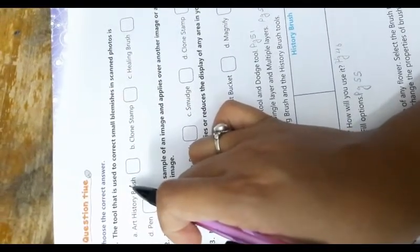Now, page number 30, sorry 57, question time. Choose the correct answer. The tool that is used to correct small blemishes in scanned photos is, it is healing brush. So take the option C.